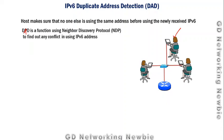Duplicate Address Detection is a function that uses the Neighbor Discovery Protocol (NDP) to find out if there is any duplication of IPv6 addresses. To detect duplication, this function uses two messages. One of them is the Neighbor Solicitation message, which is part of NDP. The host machine that has just received the IPv6 address sends this message to announce itself and ask other hosts on the network.